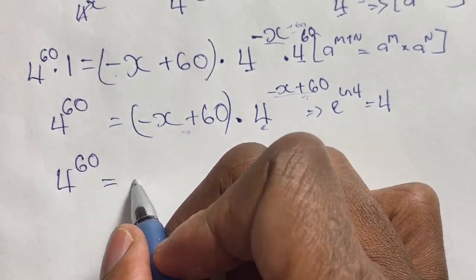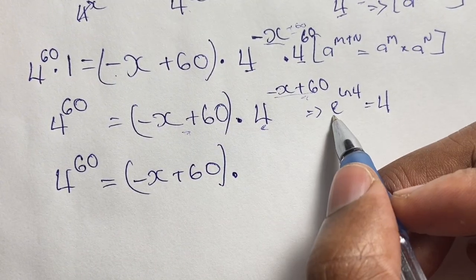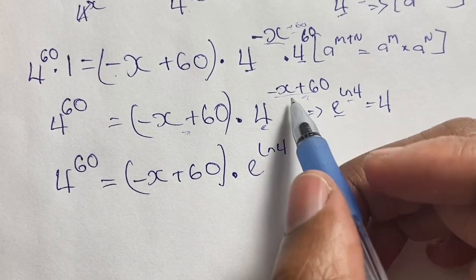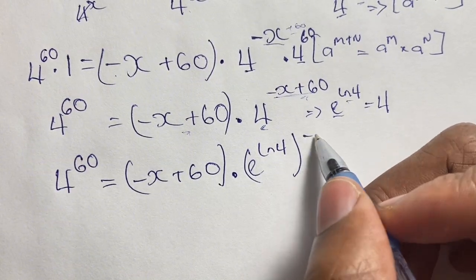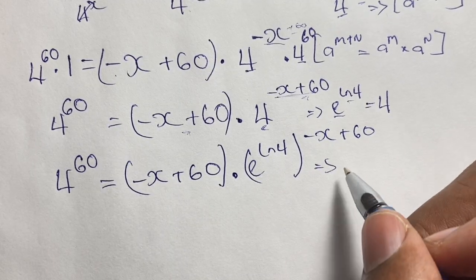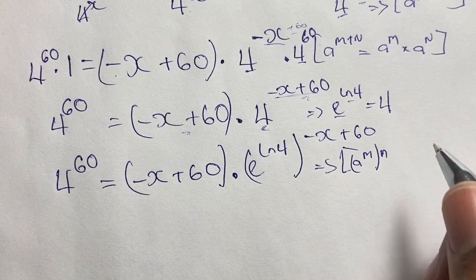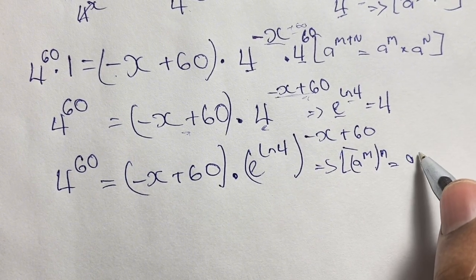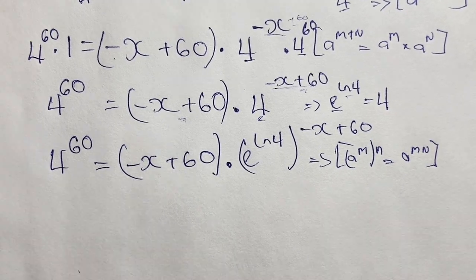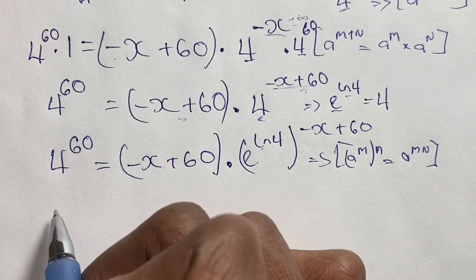So we have 4 to the power of 60 equals negative x plus 60 in brackets times e to the power of ln 4, raised to the power of negative x plus 60. Using the law of indices where a to the power of m in brackets powered by n equals a to the power of m times n, we rewrite this as e to the power of negative x plus 60 times ln 4.